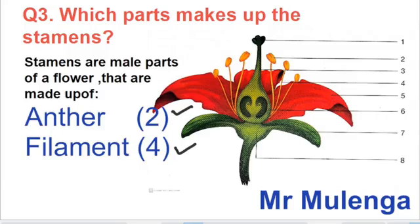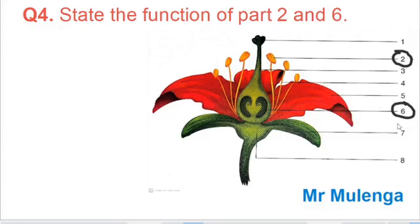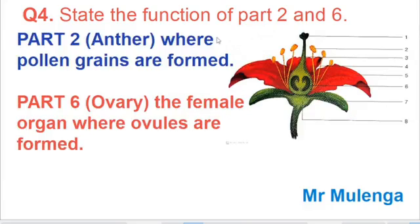Question four asks us to state the functions of parts two and six. Part two is the anther — this is where the pollen grains are formed. Part six is the ovary — it contains the ovules, which are where the female sex gametes are formed.